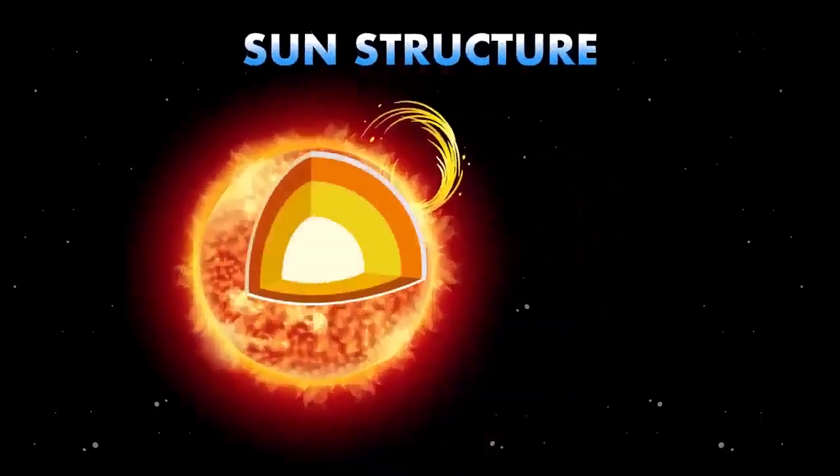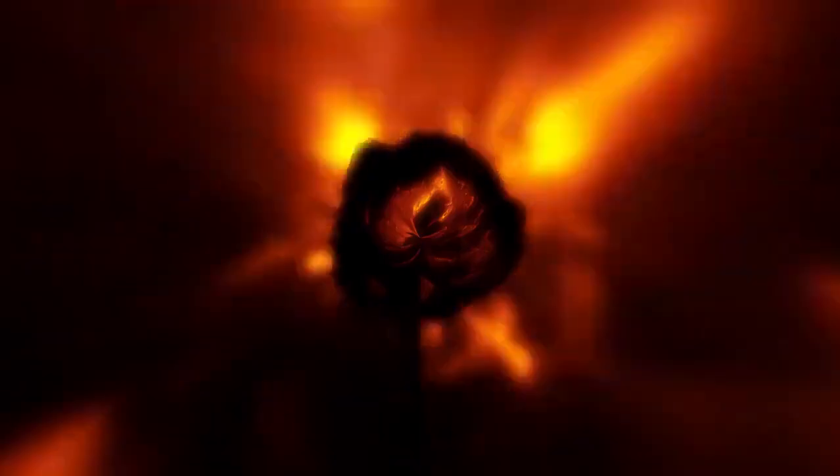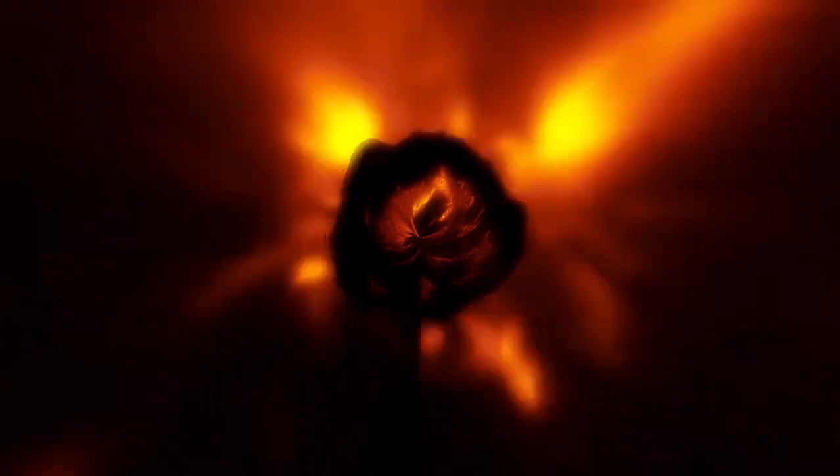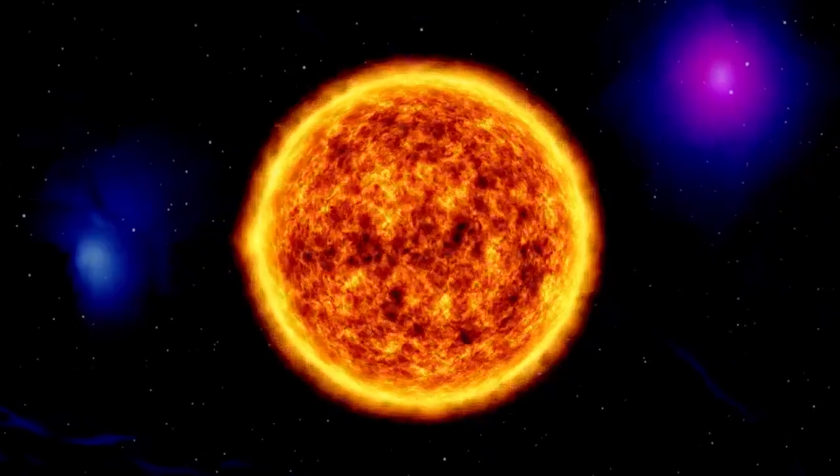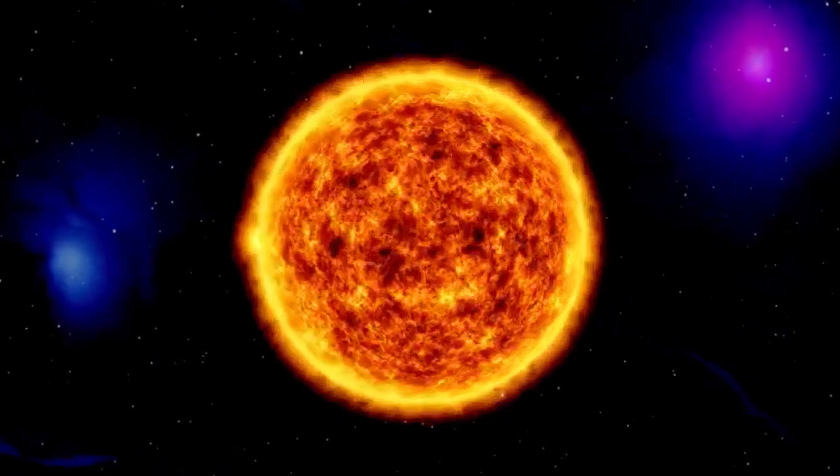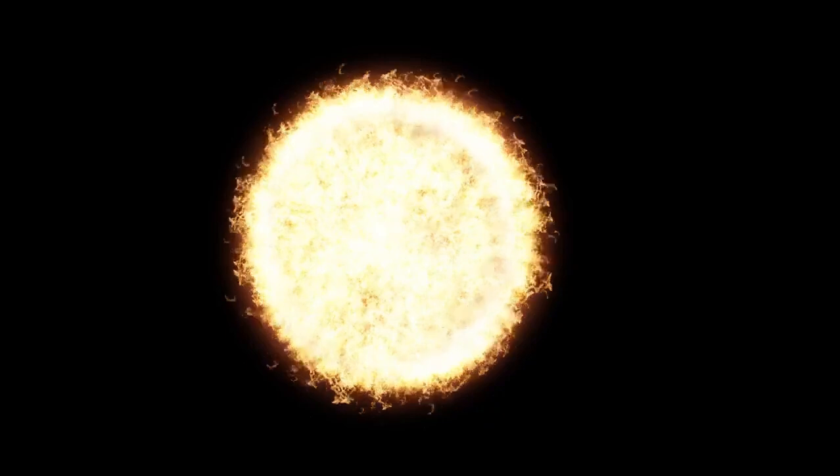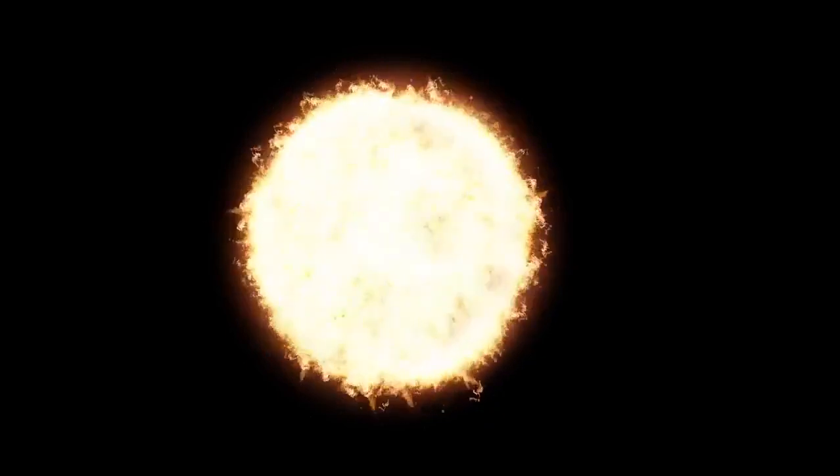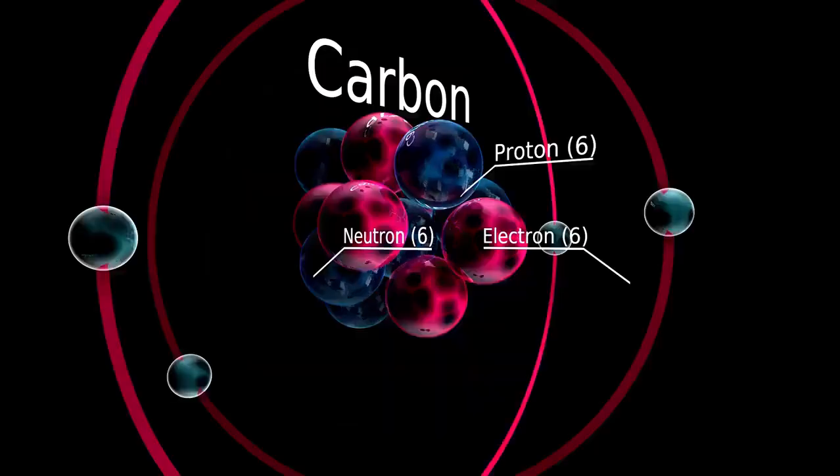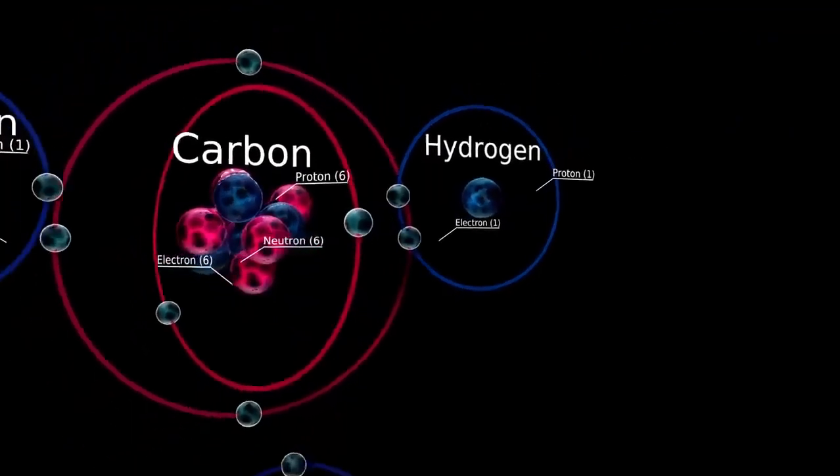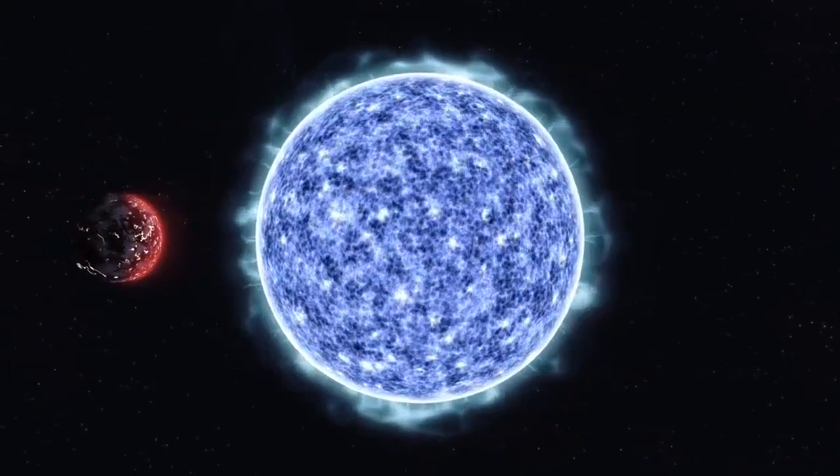As hydrogen fusion slows in its core, the outer layers expand, causing the star to grow even larger. Simultaneously, helium accumulates around the core, triggering a secondary fusion process known as helium envelope burning. In this phase, helium atoms fuse to create heavier elements like carbon and oxygen, releasing bursts of energy that counteract the gravitational forces trying to collapse the star. However, unlike hydrogen fusion, helium burning is less stable, leading to irregular energy releases that destabilize the star's structure.